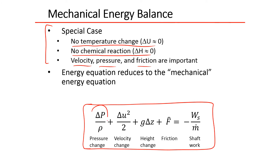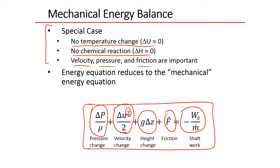Let me go over each term. This is a pressure change. This is a velocity change — you can see the square there, so make sure you include the square and also divide by two. We also have our height change, then any loss due to friction, and then this is shaft work. Now shaft work WS is done by the fluid, and we've normalized everything by the mass flow rate.